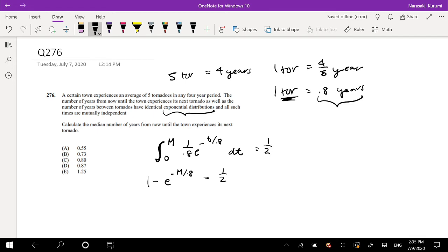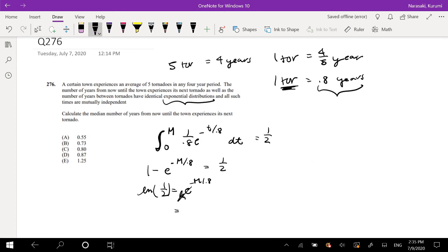So we're just solving for m right now. I'm going to bring that e over to this side and half over here, so that's equal to half e to the negative m over 0.8. Take the natural log of both sides and multiply this side by negative 0.8 to cancel out.